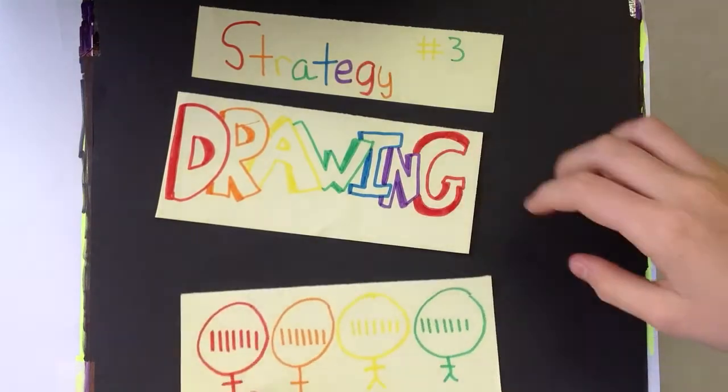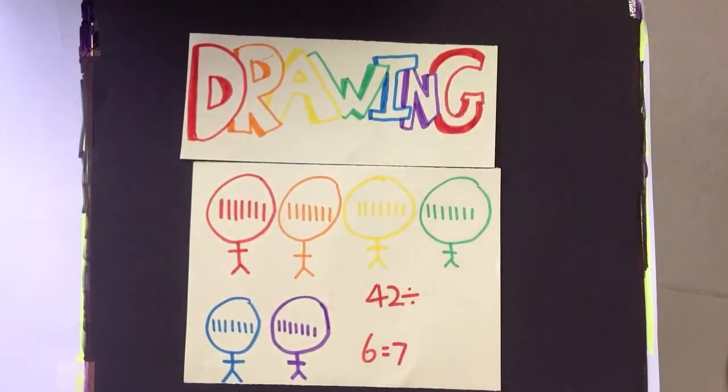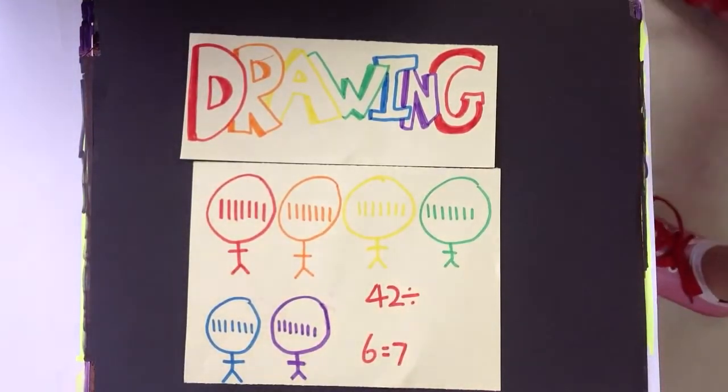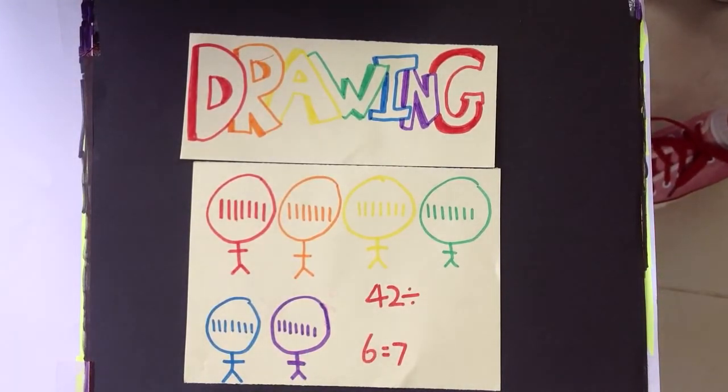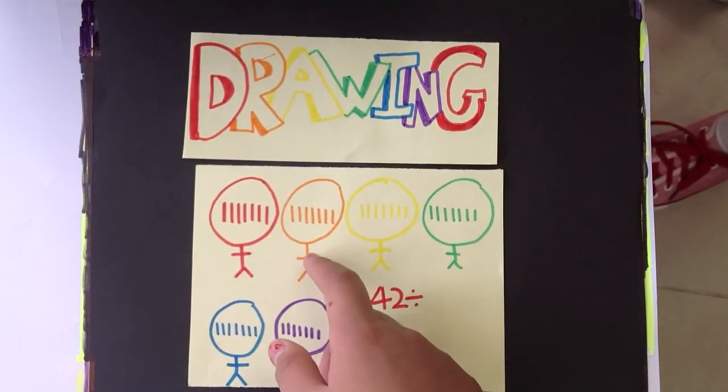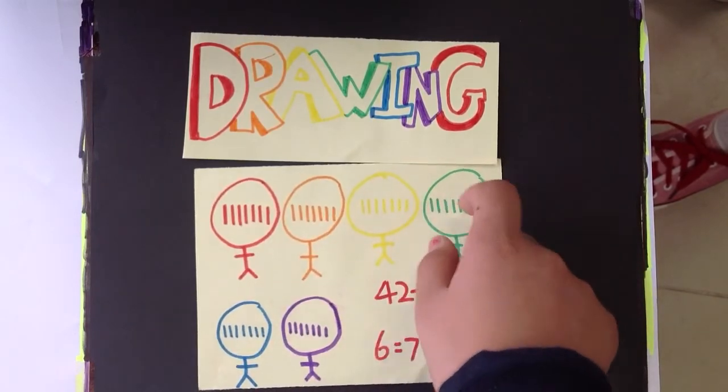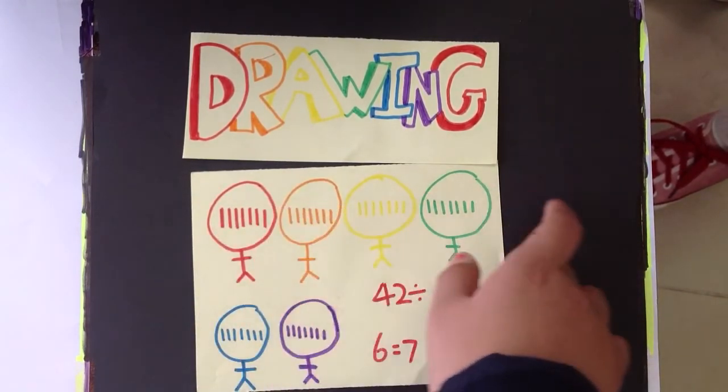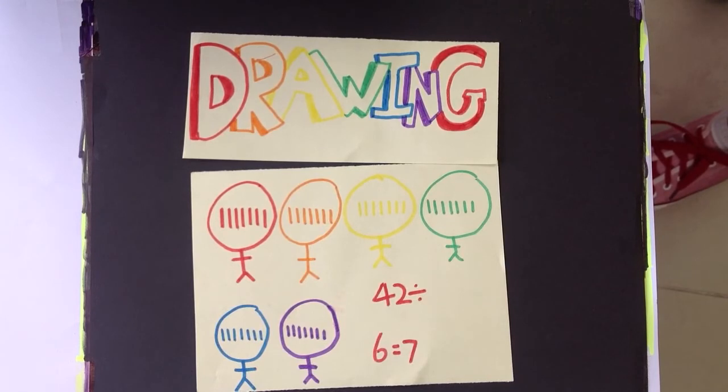Strategy number 3. Drawings. This is a strategy by using drawings. It's a good method to use. If there are 6 people and if you put one tally in each people's head and 1, 2, 3, 4, 5, 6, keep going on until you get 42. And if I have 7 tallies in all, then probably the answer will be 7. Thank you for watching.